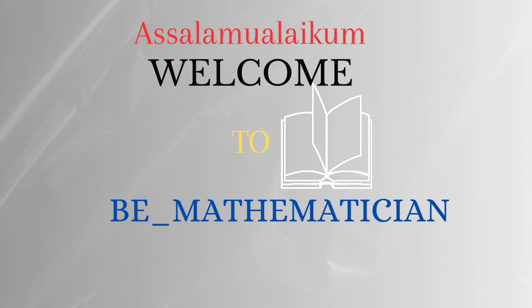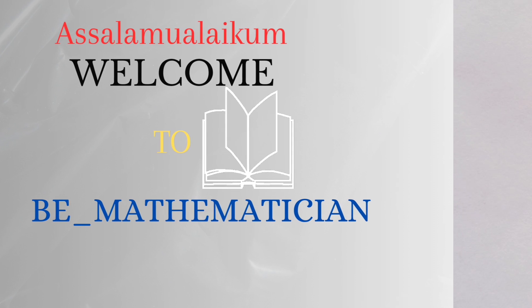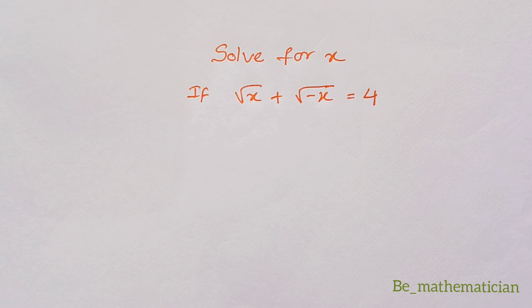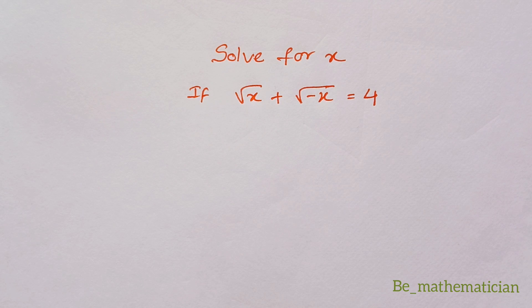Hello friends, welcome to Be Mathematician. In today's video we are going to solve this amazing problem: if √x + √(-x) = 4, then we have to find all the possible values of x.